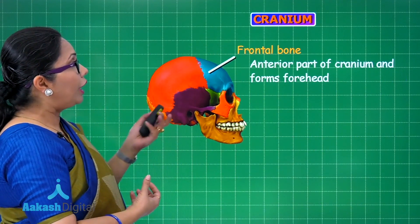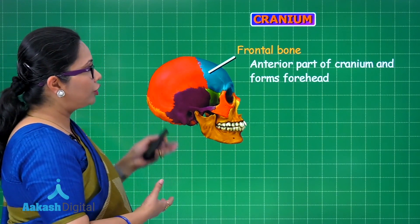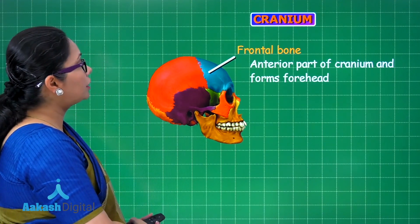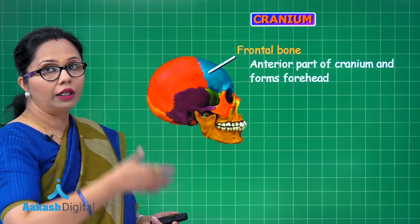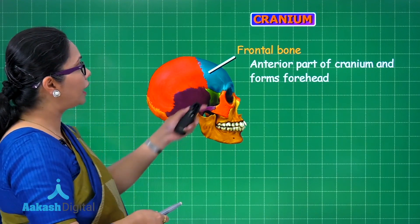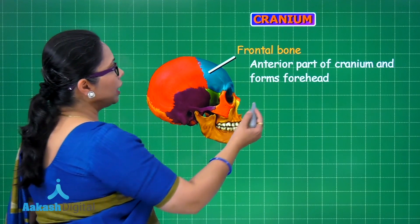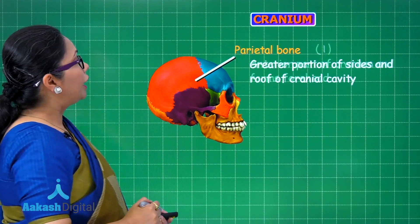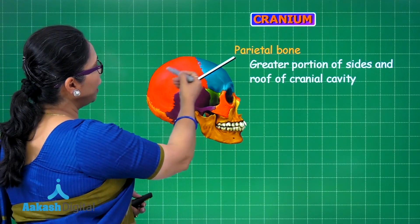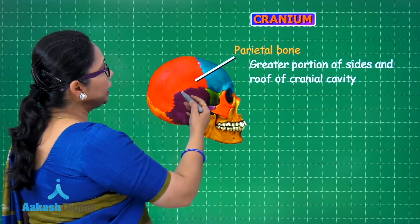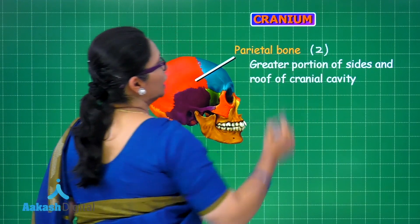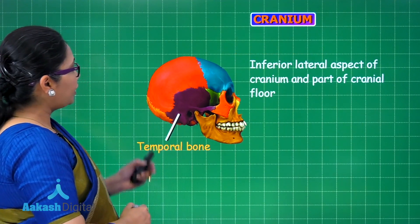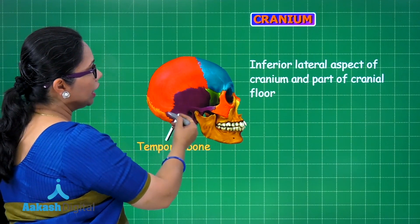The cranium has 8 bones in total. The frontal bone forms the forehead and the upper part of the eye orbit; it is a single unpaired bone. The parietal bones make up the upper part of the sides of the cranium and form the major part of the roof of the cranial cavity; these are paired bones, so there are two.